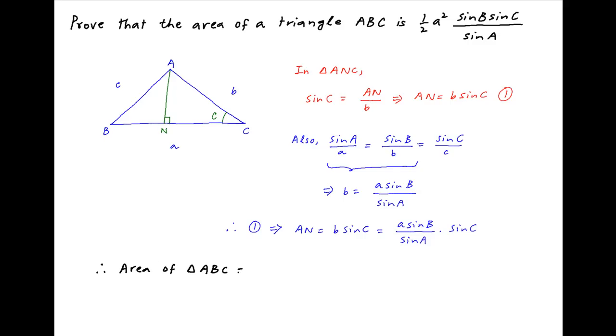Therefore, the area of triangle ABC, which is equal to half of the base BC times the perpendicular AN, is equal to half of BC, which is equal to a, times AN, which is equal to a sine B sine C upon sine A.